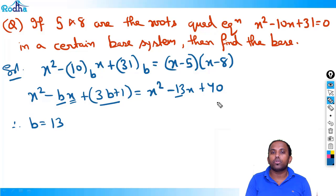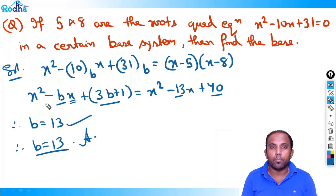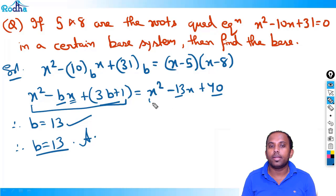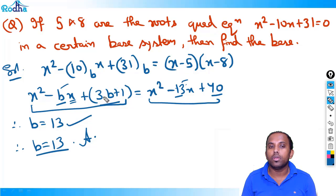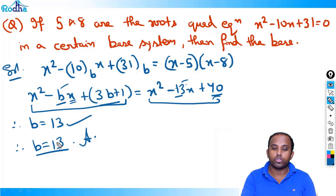Let's check the constant term: if 3B+1 = 40, then B = 13, which satisfies it. Therefore the base value is 13. By comparing left-hand side to right-hand side, B = 13 is confirmed as the answer.